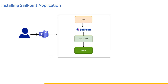We will see the installation part of the SailPoint application. Firstly, the user has to log in, then click on the Teams application and navigate to the Apps button. Then select the SailPoint app and click on the Add button. Once the SailPoint app is added, click on Open to see the chatbot on Microsoft Teams.